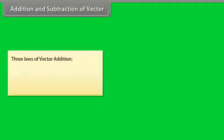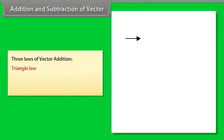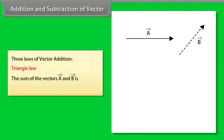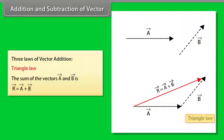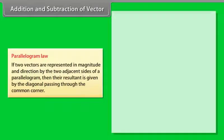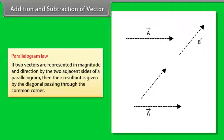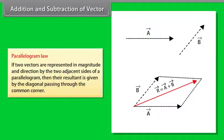Addition and subtraction of vectors. Vector addition is done with the help of three laws. A. Triangle law: The sum of the vector A and vector B is R vector equals A vector plus B vector. B. Parallelogram law: If two vectors are represented in magnitude and direction by two adjacent sides of a parallelogram, then their resultant is given by the diagonal passing through the common corner.